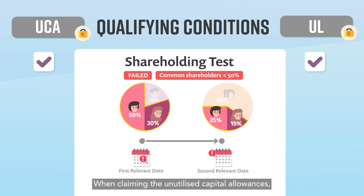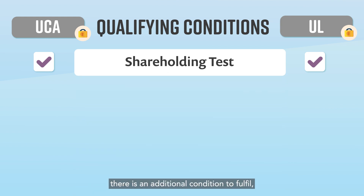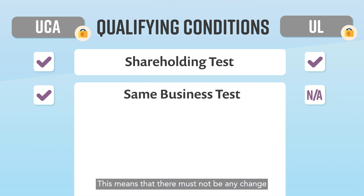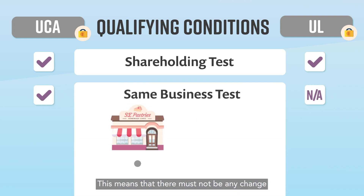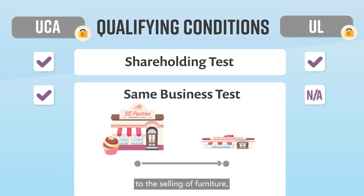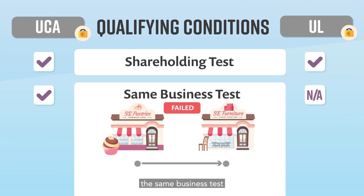When claiming the unutilised capital allowances, there is an additional condition to fulfil, which is the same business test. This means that there must not be any change in the company's principal activities. For example, if SE Pastries changes its bakery business to the selling of furniture, the same business test condition will not be met.